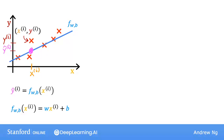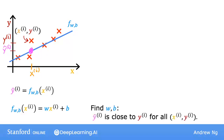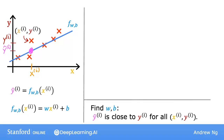So now the question is, how do you find values for w and b so that the prediction y-hat i is close to the true target y_i for many or maybe all training examples x_i, y_i? To answer that question, let's first take a look at how to measure how well a line fits the training data. To do that, we're going to construct our cost function.